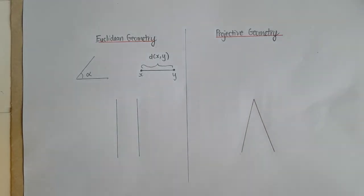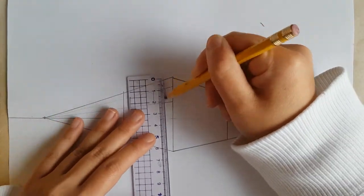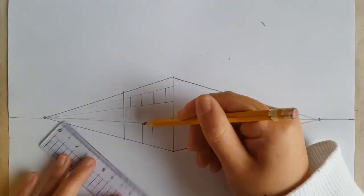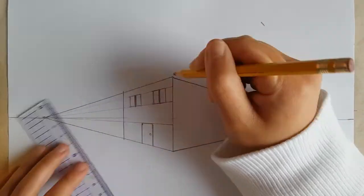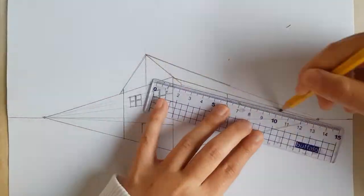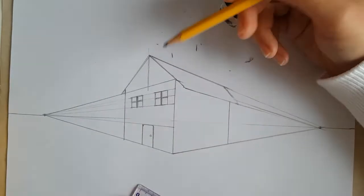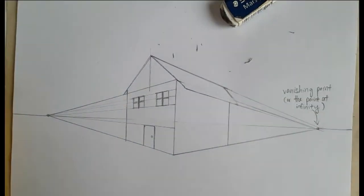What makes projective geometry so interesting is that it focuses more on the preservation of geometric properties under projection. Common applications of projective geometry are found in architecture and perspective art. The main principles artists follow in perspective art are: a straight line in perspective remains straight, and parallel lines converge at a single point known as the vanishing point — or in mathematics, we call this a point at infinity.